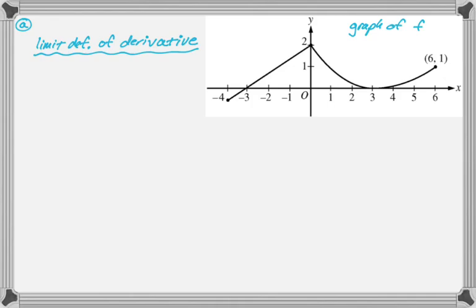If f prime of 0 exists, then f prime of 0 will be equal to the limit as x approaches 0 of f of x minus f of 0 all over x minus 0. So this is only true if the limit exists.